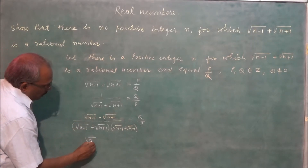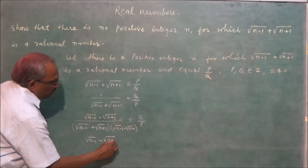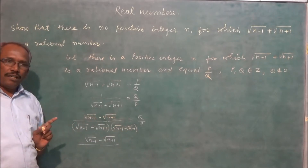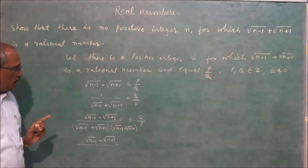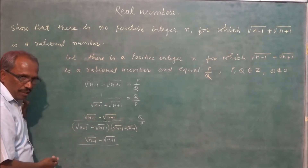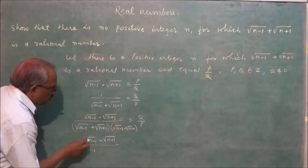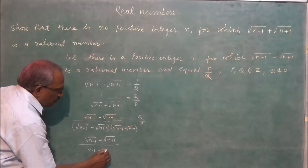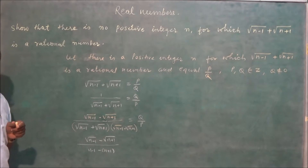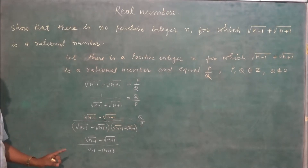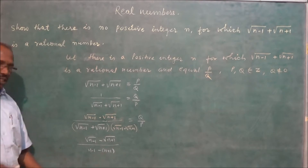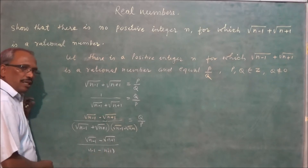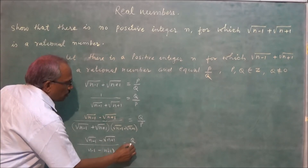So the numerator becomes root n minus 1 minus root n plus 1, and using the identity (a plus b)(a minus b) equals a squared minus b squared in the denominator, we get a squared minus b squared, which gives n minus 1 minus n minus 1, simplifying to minus 2. So we get root n minus 1 minus root n plus 1 equals minus 2q upon p.